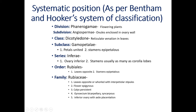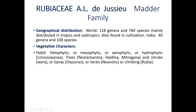The distinguishing characters for Family Rubiaceae are: leaves opposite or whorled with interpetiolar stipules — interpetiolar stipules are present in this family; flower epigynous — meaning flowers with inferior ovary; calyx persistent — calyx remains present up to the death of the fruit; gynoecium bicarpellary syncarpous; inferior ovary with axile placentation. In the world, there are 118 genera and 706 species. In India, 40 genera and 100 species are cultivated.